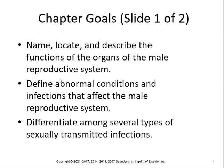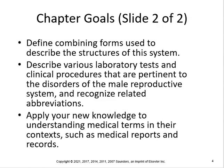Define abnormal conditions and infections that affect the male reproductive system. Differentiate among several types of STDs or STIs, and define combining forms used to describe the structures of the system. Describe various lab tests and clinical procedures pertinent to the disorders of the male reproductive system. Recognize related abbreviations and apply your knowledge to the understanding of medical terms and their concepts.